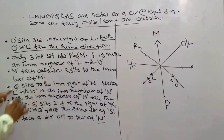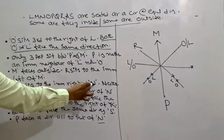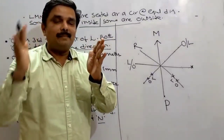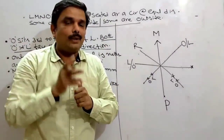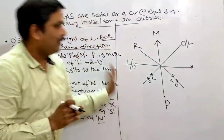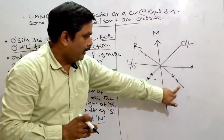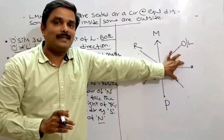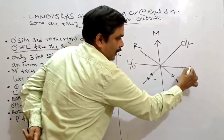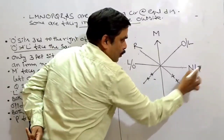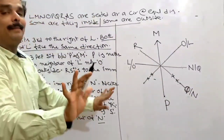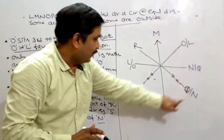Q sits to the immediate right of N — this is another important clue. Q and N must be neighbors. Looking at what places are left, only two places remain for neighbors. These two places must be given to N and Q, with Q to the immediate right of N. Now all places are filled up — not fully confirmed but more or less settled. The only person remaining is S.